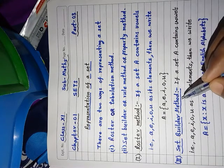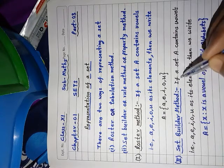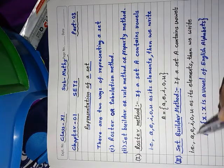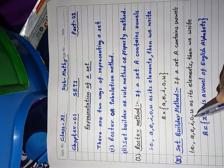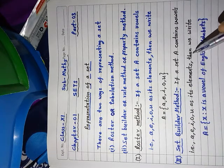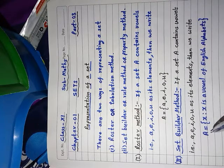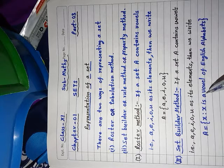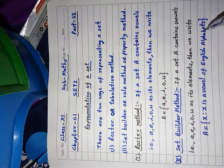If a set A contains vowels, that is a, e, i, o, u as its elements, then we write A = {x such that x is a vowel of English alphabet}.